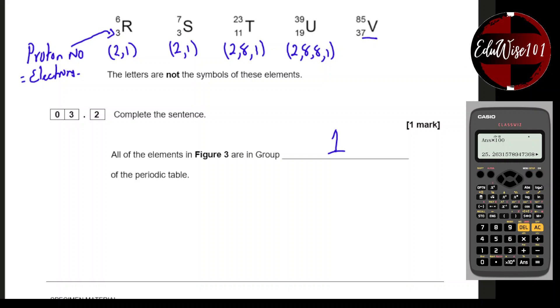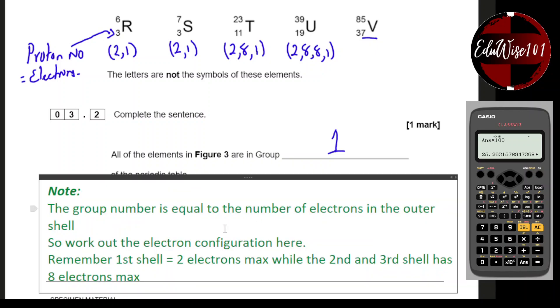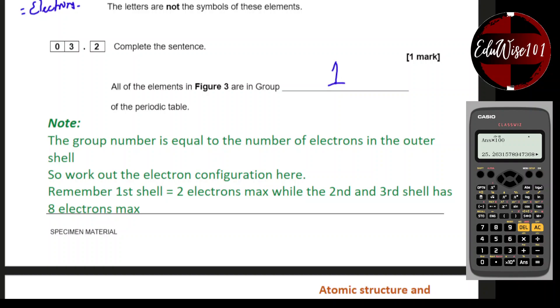Make a note of this: The group number is equal to the number of electrons in the outer shell. To work out the electron configuration, remember the first shell has 2 electrons maximum, while the second and third shells have 8 electrons maximum.